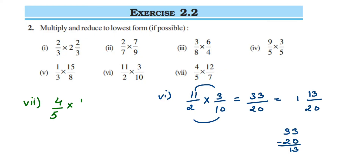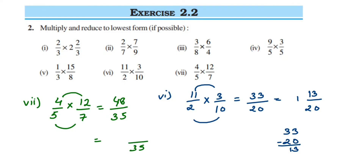Seventh question: 4/5 multiplied by 12/7. We cannot cancel numbers here, so multiply: 4 × 12 = 48 and 5 × 7 = 35, giving 48/35. This is improper, so we convert to a mixed fraction. 35 × 1 = 35 is the closest value without exceeding 48. 48 − 35 = 13, so the answer is 1¹³/35. I hope this question is clear. If you have any doubt you can drop a comment — thank you so much for watching.